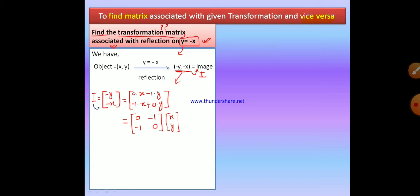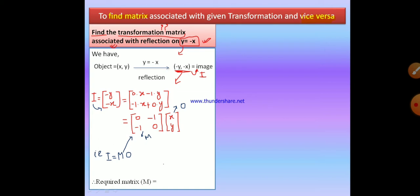These two steps are equivalent because when you multiply these two matrices you get the original result. Here x comma y stands for object and minus y comma minus x stands for image, with a 2-by-2 matrix in between — that is the required transformation matrix. We are using the formula I equals to MO: image equals to transformation matrix M times object. Comparing with our solution, the required transformation matrix M is 0, minus 1, minus 1, 0.